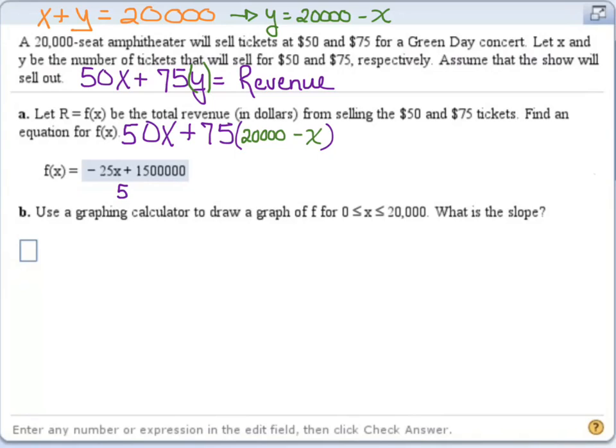We could of course simplify this a little bit by distributing the 75 through, giving us 50X plus 1,500,000 minus 75X. And we can make this look a little prettier, giving us negative 25X plus 1,500,000. So this is our revenue function, where X is the number of $50 tickets we sell.